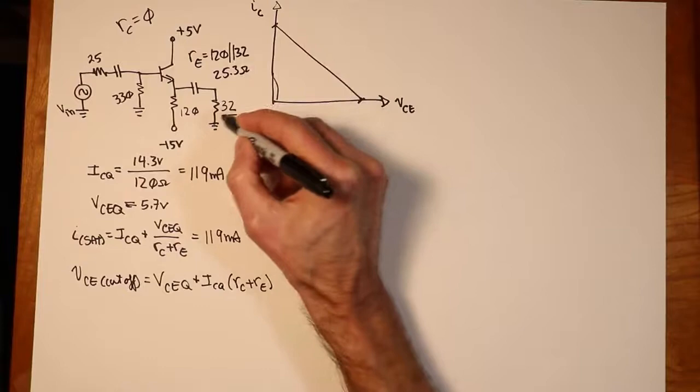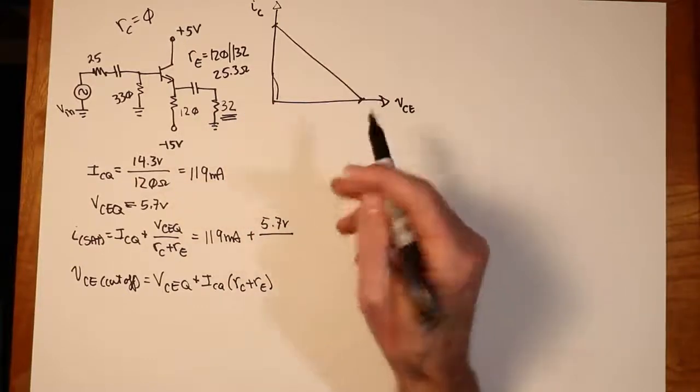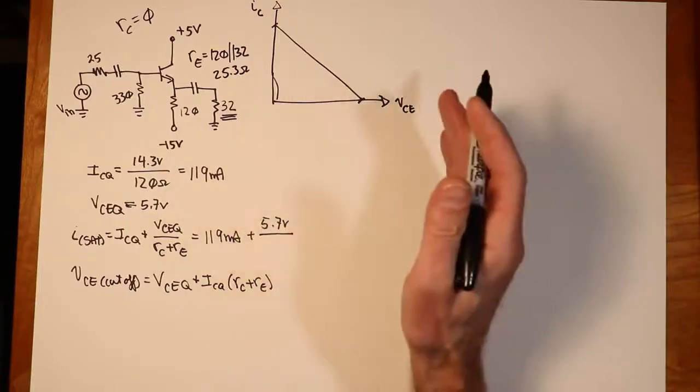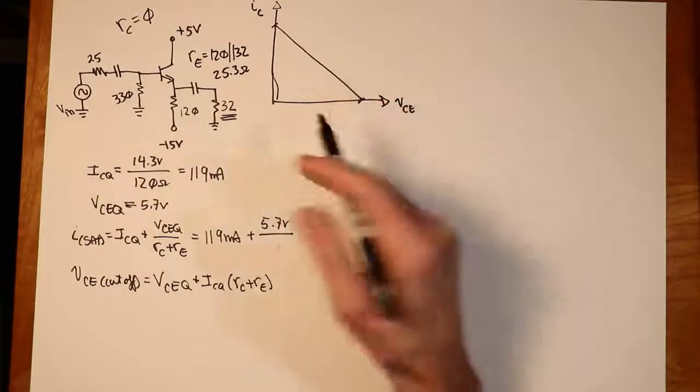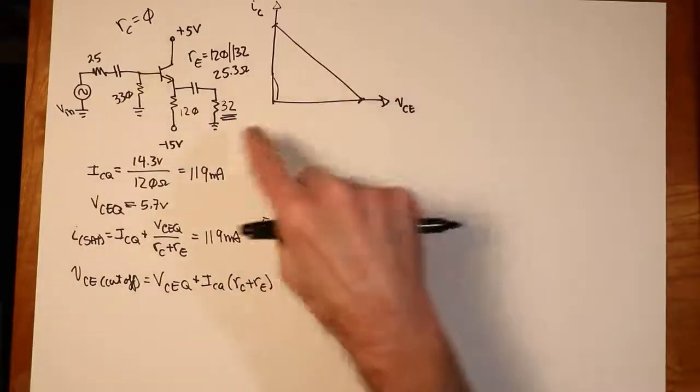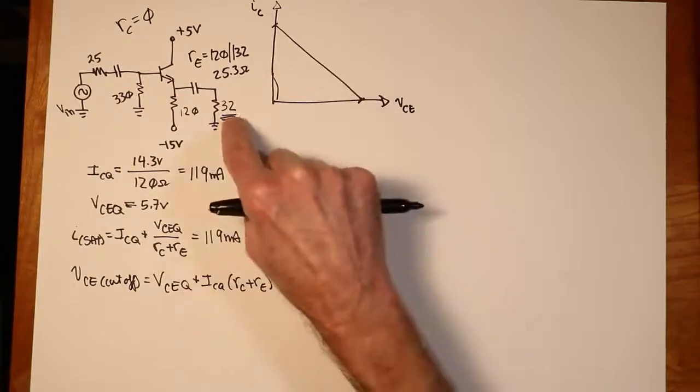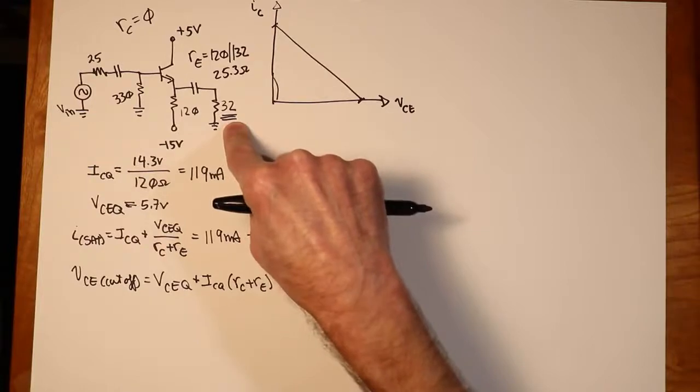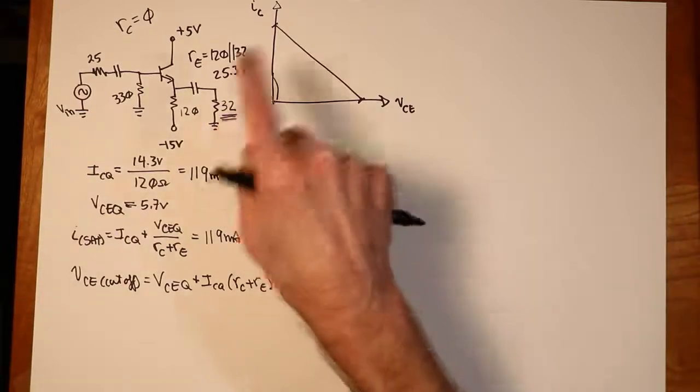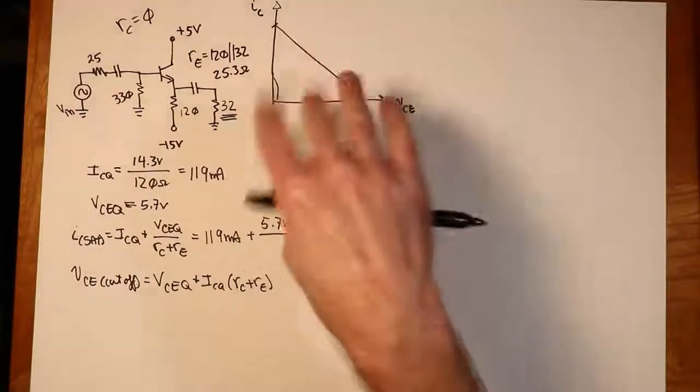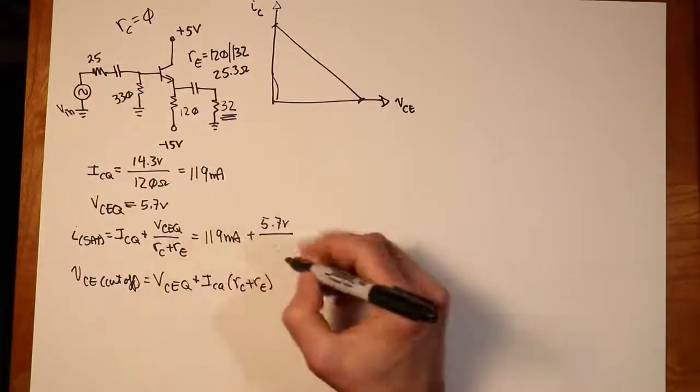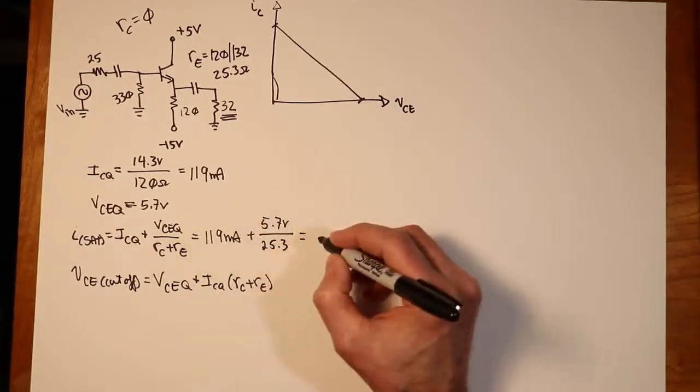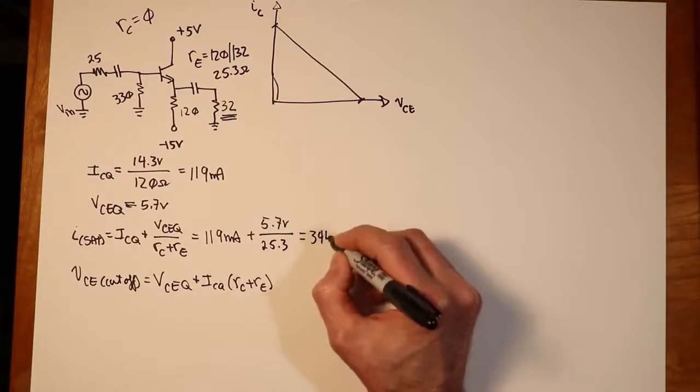32 ohms, by the way, could be something like a small loudspeaker might be 32 ohms. 8, 16 are more popular. 4 ohms, definitely very popular in car audio. But you sometimes see in small devices, maybe a 32 ohm loudspeaker. And this would be around the value you would get, maybe even a little on the low side for headphones. So each ear cup might be somewhere in that range, 30, 40, 50, 60 ohms, something like that.